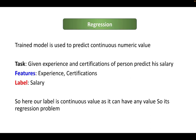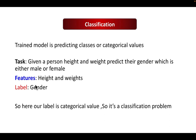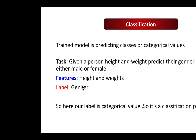In regression, the trained model is used to predict a continuous numeric value. For example, given the experience and certification of a person, predict their salary — the features are experience and certification, and the label is salary, which can be any value, making it a regression problem. In classification, the trained model predicts classes or categorical values. For example, given a person's height and weight, predict their gender — which is either male or female — so the label is categorical and it is a classification problem.